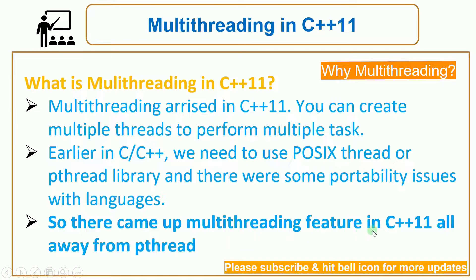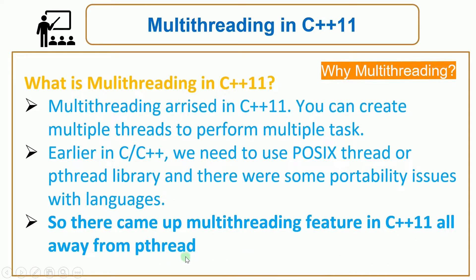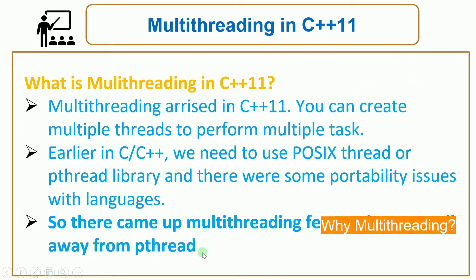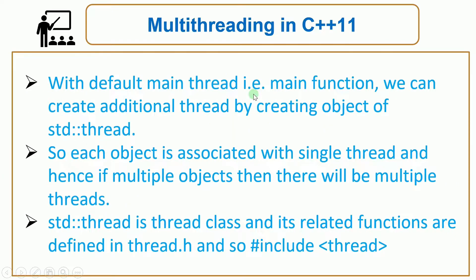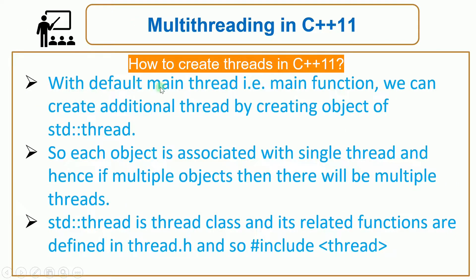Multi-threading came in C++11, so you no longer need to use p-thread. Now we will see how to create multiple threads in C++11. With the default main thread, that is the main function, we can create additional threads by creating objects of std::thread. We will see what this means.